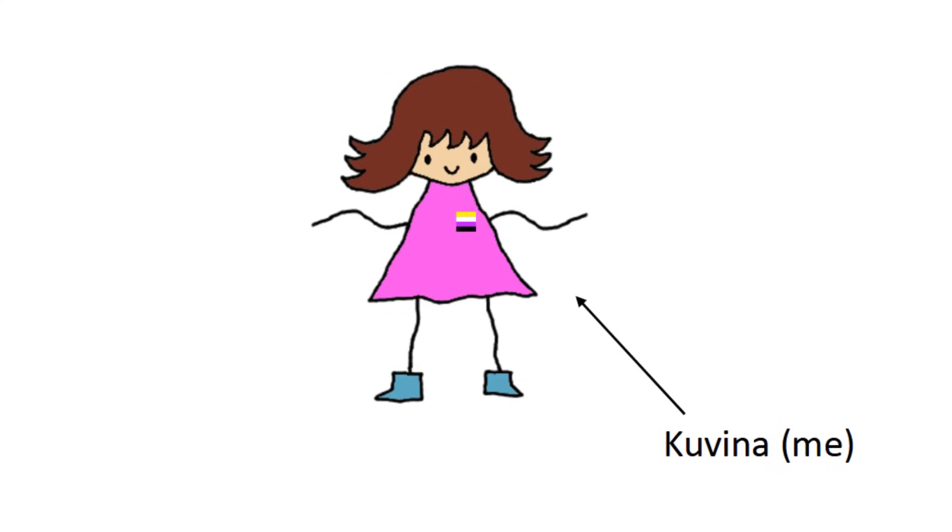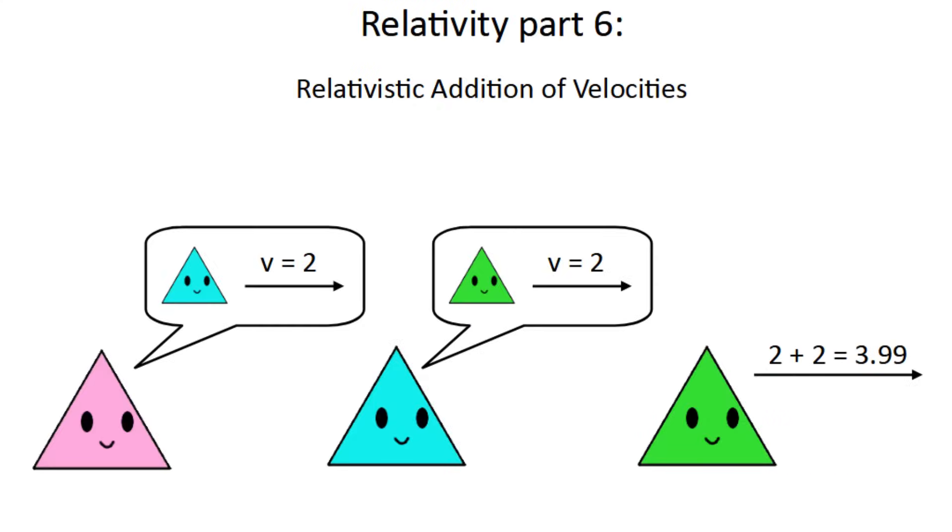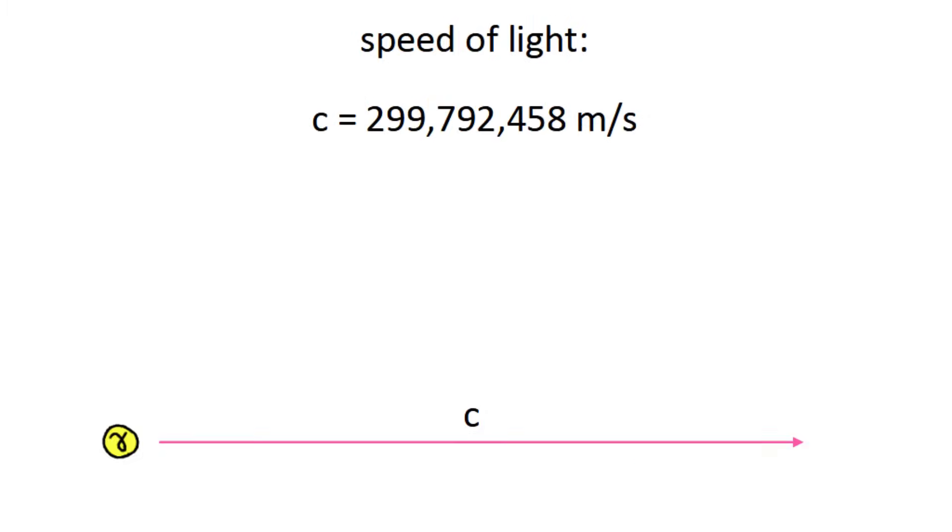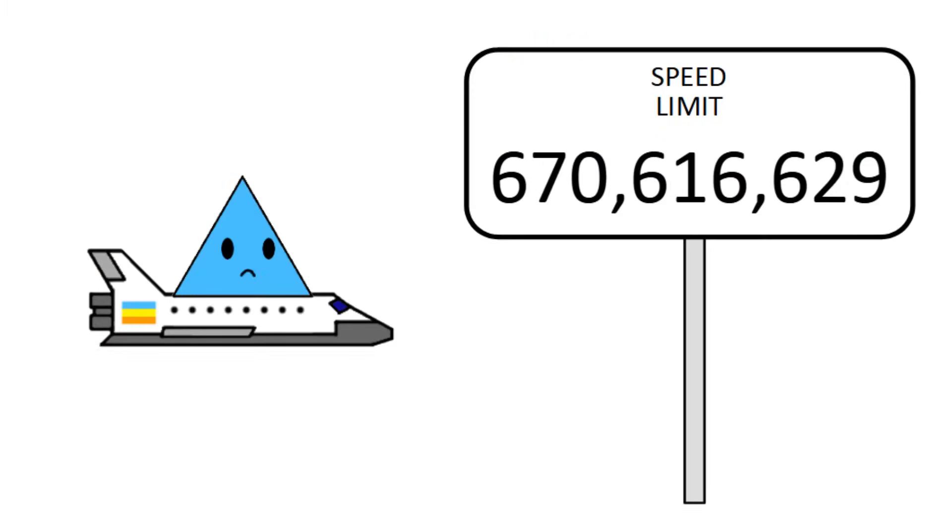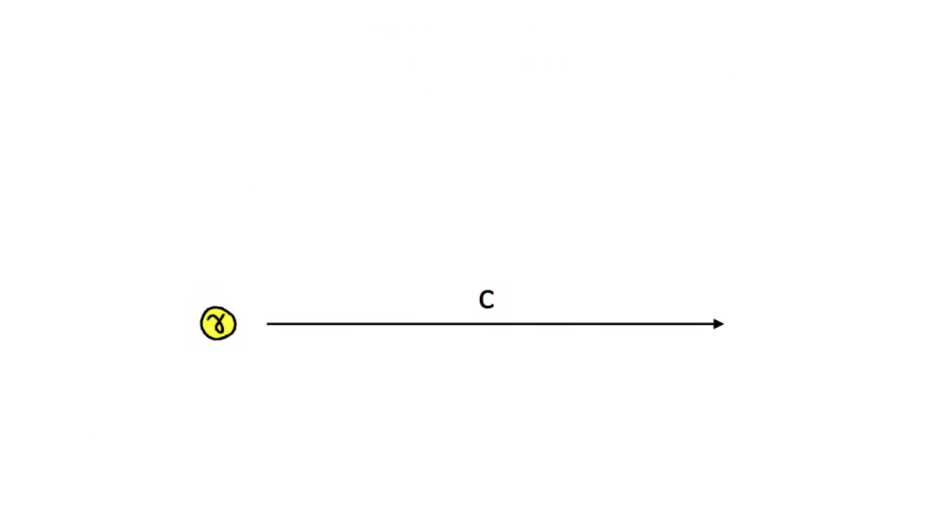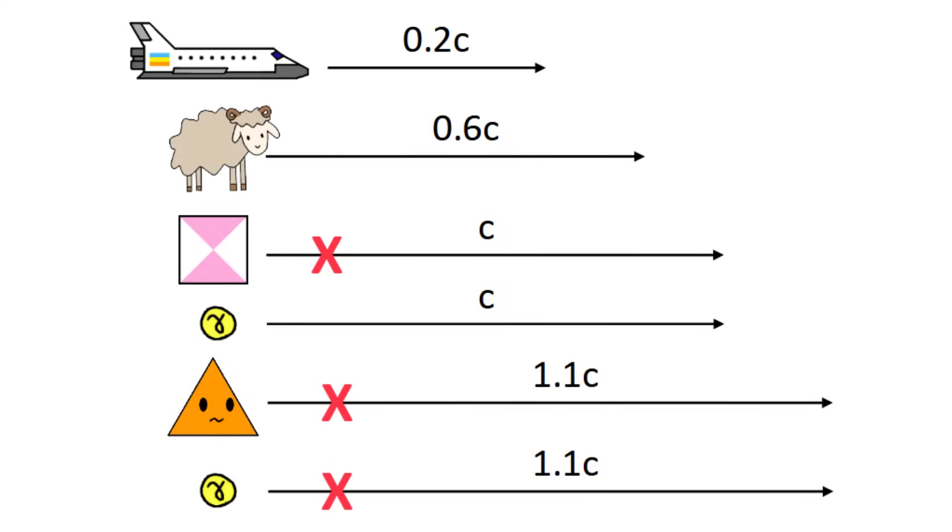Hi everyone, my name is Kuvina and welcome to Relativity part 6. If there's one thing you know about the speed of light, it's that it's the speed limit of the universe. Nothing can go faster than light, and in fact nothing with mass can even reach light speed. But why is this the case?